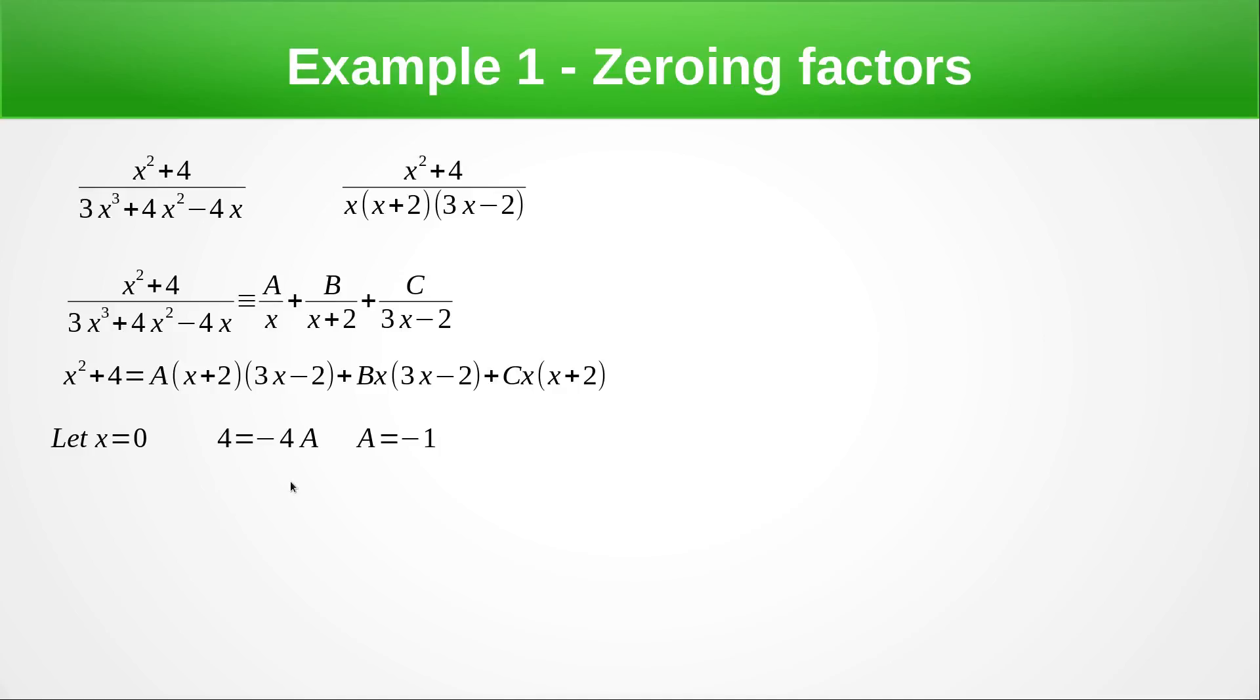So now let's pick another value for x. Let's go for x = -2 because that makes the (x + 2) term zero which makes this zero makes this zero so we're just left with this one here. Then we're left with 8 from this side is 16B from this side so that means B = 1/2.